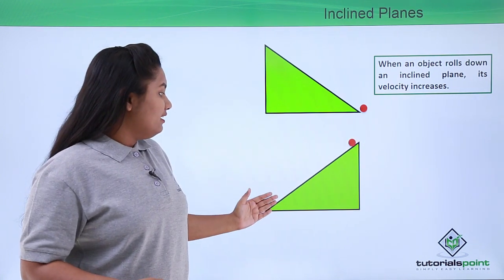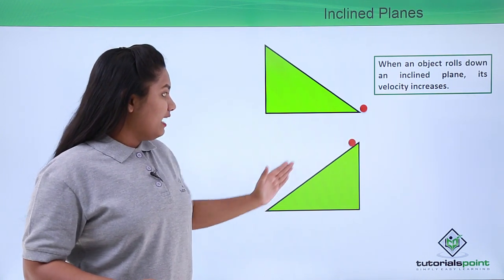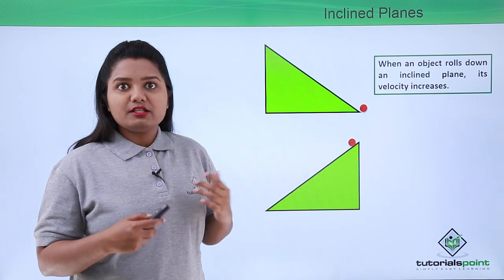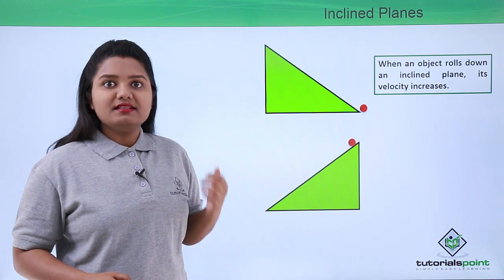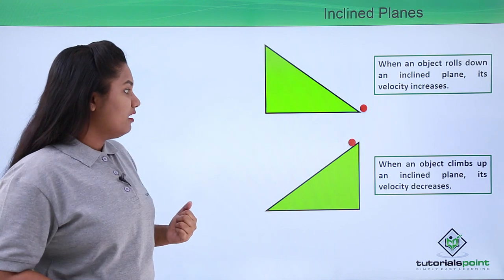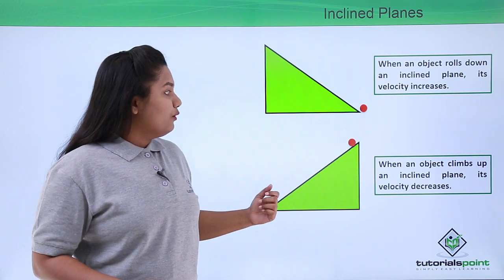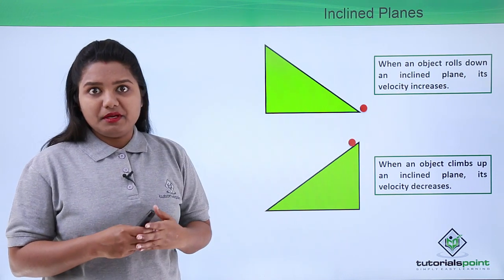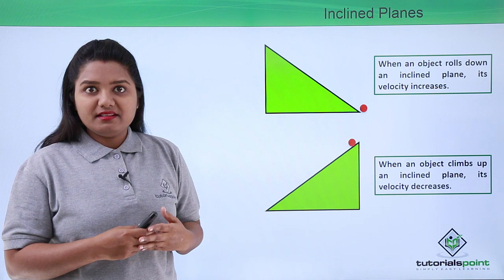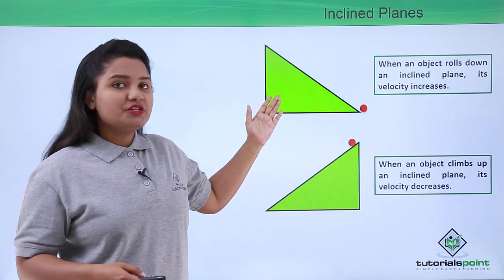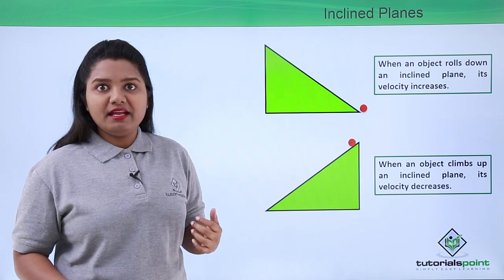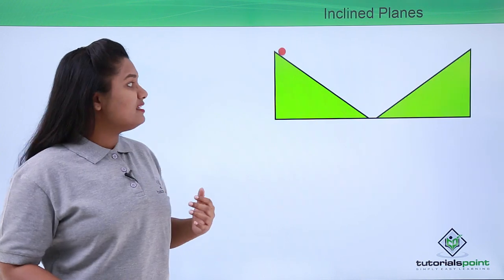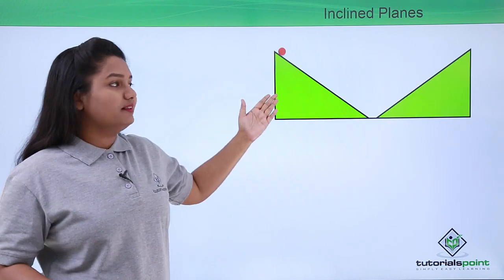That is, when it climbs a certain inclined plane its velocity decreases. Now what Galileo did in his experiment was that he placed two such inclined planes in such a way that these two planes faced each other.